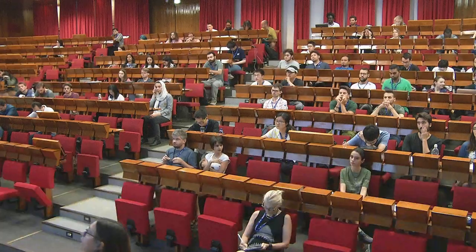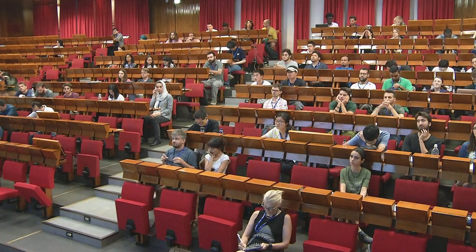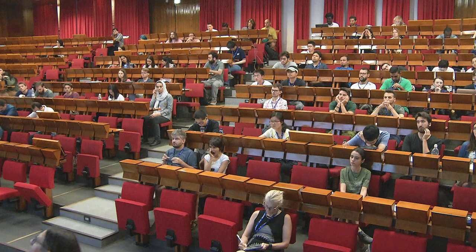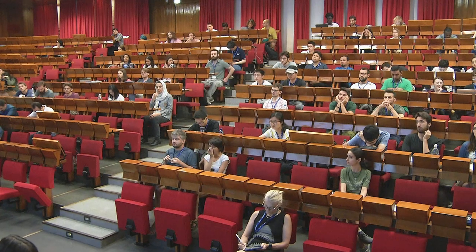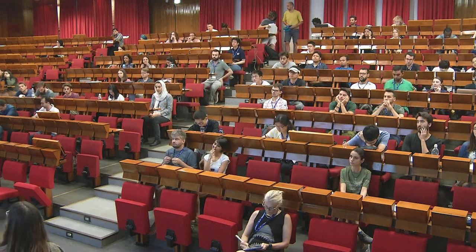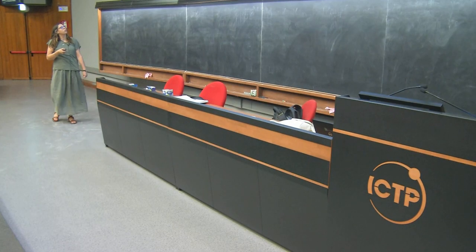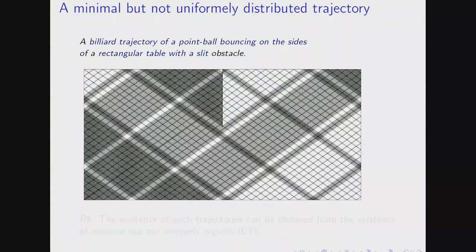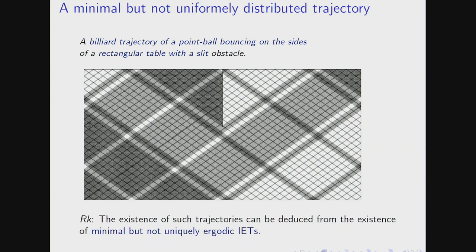But it will not equidistribute — you can see there are some areas which are dark gray and some areas which are white. Those are areas where the trajectory spends more time and areas where it spends less time. So visually, this trajectory doesn't fill the table uniformly according to Lebesgue. There is a way to build this using interval exchanges which are minimal but not uniquely ergodic. This was really a digression.